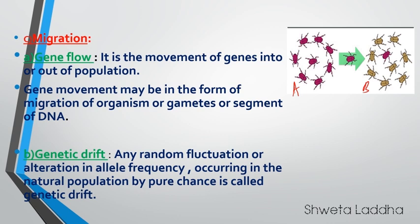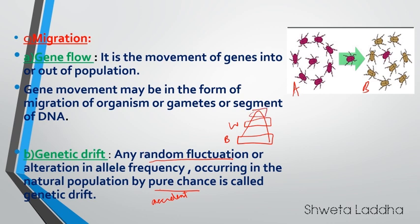Genetic drift — what is genetic drift? Any random fluctuation or alteration in allele frequency occurring in a natural population by pure chance or by accident is called genetic drift. For example, suppose there is a mountain where white sheep were grazing at one height and black sheep at another. Accidentally, there was a landslide and all the white sheep got killed by pure chance, and they didn't mate with the black sheep. So those genes suddenly vanished from the population. Such accidental fluctuations are called genetic drift.